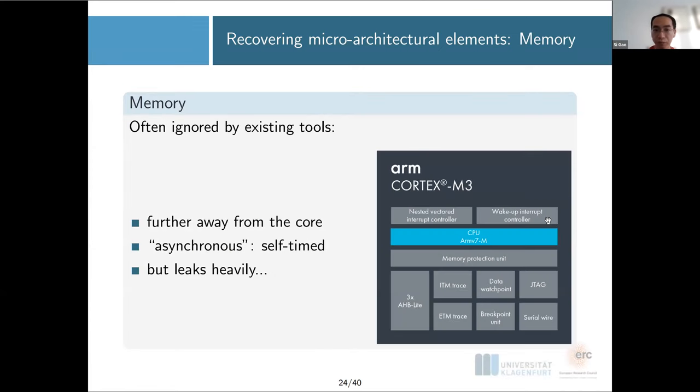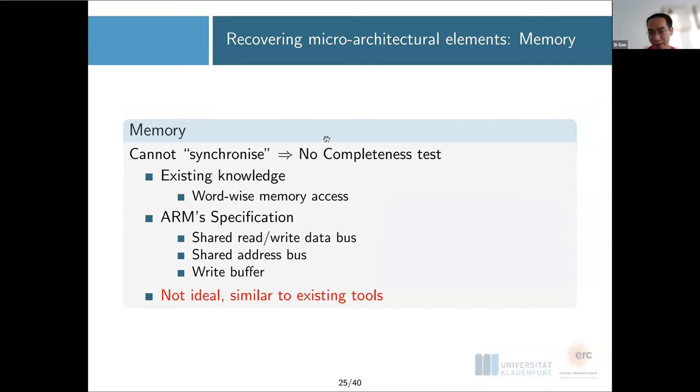For the memory part, it's a bit of a mess. It's often ignored by most existing tools for a good reason, because the memory part actually lies a bit far away from the core itself. To make it worse, the memory part is usually self-timed, which means it has its own timing. So if you're asking a memory to fetch you something 10 times, they will have different timings because they can say please wait for me. But in this case, we cannot really align our realistic traces with the instruction you are executing now. So there's no way you can do this completeness test anymore. So we have to go back to what previous existing tools are using: relying on existing knowledge, we assume everything is word-wise. Then we follow a few specifications from ARM: shared data bus, address bus, and write bus. This is of course not ideal.